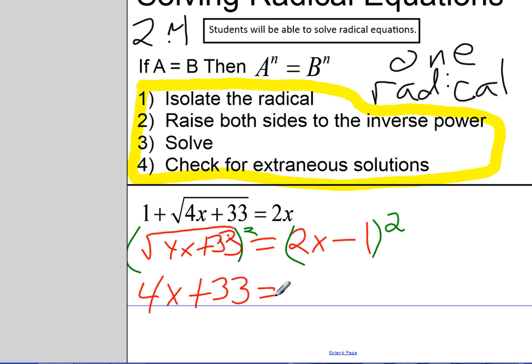On the right-hand side, I have to raise a binomial to the power of 2. So I'm going to use that formula that I've been making you learn, the square of a binomial. So I've got the first term squared, a times b multiplied together times 2 gives me negative 4x, and then 1 squared is 1.